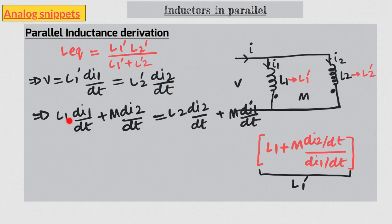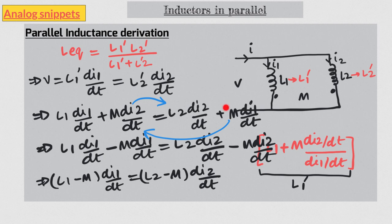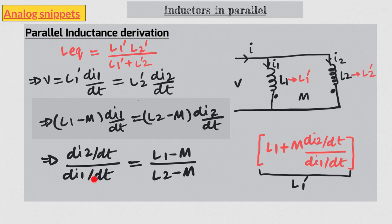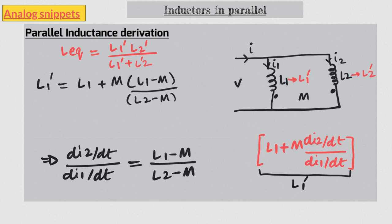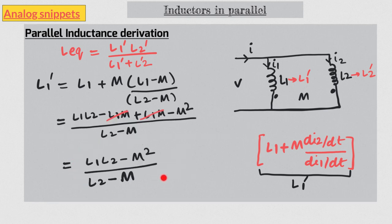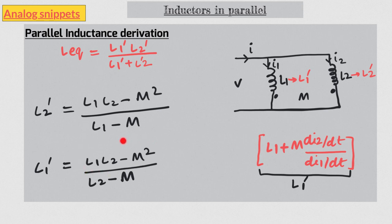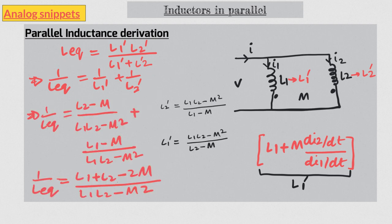From this effective inductance equation we can appreciate why the series case is simpler: in series, by definition both inductors carry the same current, so the ratio di2/di1 is just 1. To find this ratio for the parallel case, we use the fact that the voltage across both parallel inductors must be equal, and voltage is given by L·di/dt. Using this equality and collecting similar terms, we can find the desired ratio. Substituting back into the effective inductance equation and simplifying gives us the effective inductance for each inductor. Both have the same numerator and differ only in denominator. Combining them into the parallel formula and inverting yields our final result — the parallel inductance equation with mutual inductance.